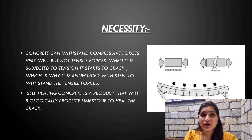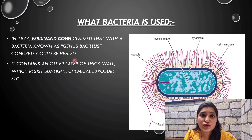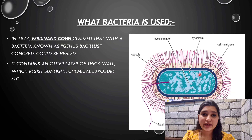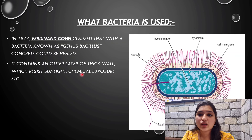Now we have one alternative because of a bacteria called Genus Bacillus. A scientist whose name was Ferdinand Korn, in 1877, told us that a bacteria — Genus Bacillus — can heal the concrete. This bacteria has a special feature: its outer wall is so capable that it can resist sunlight, chemical exposure, and other environmental effects. So we use this bacteria for self-healing concrete.